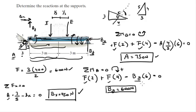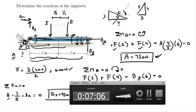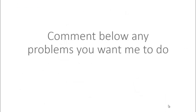Final answer: BX = 450 N, BY = 600 N, and A = 750 N. Sorry for getting a little messy on the screen. Please comment below if you want me to do any problems and I'll be happy to help — thank you!